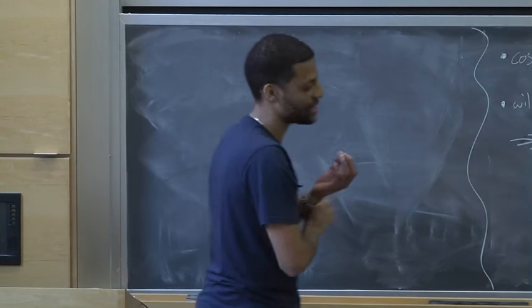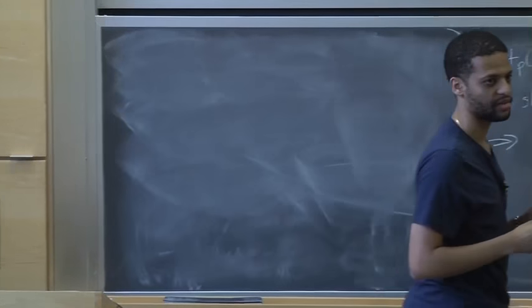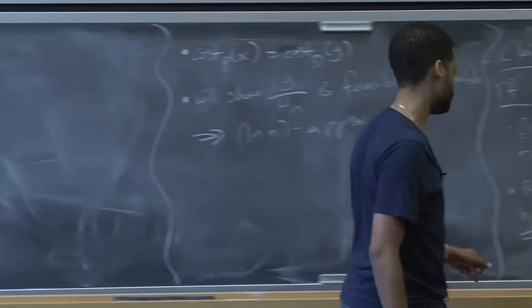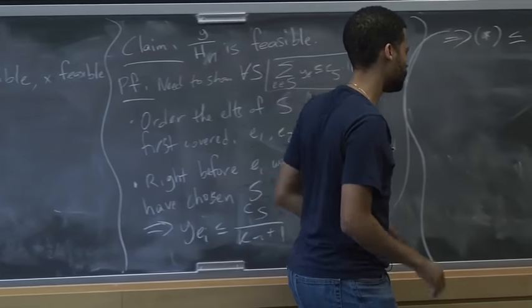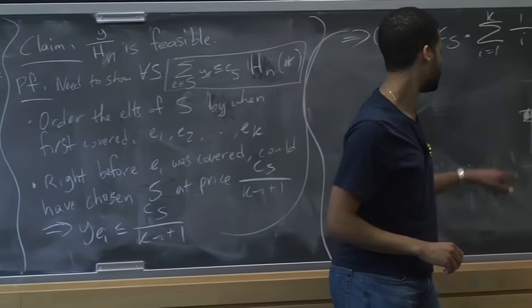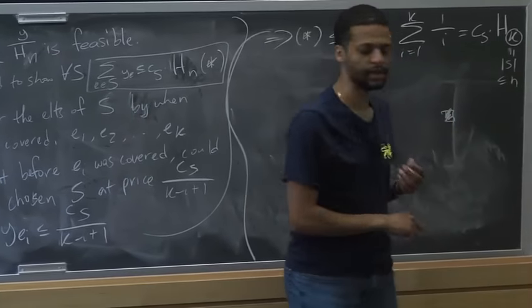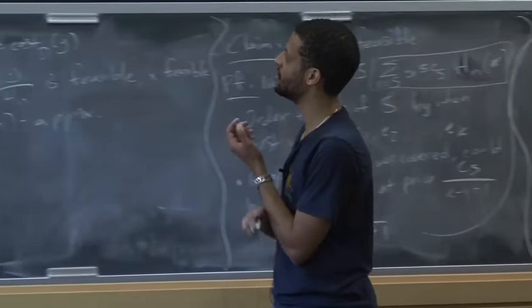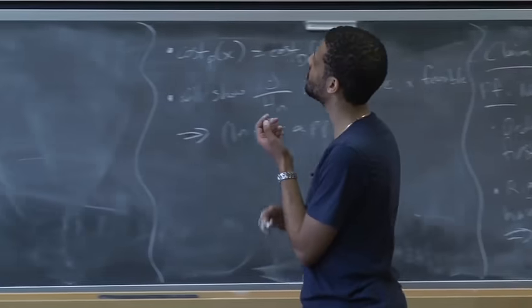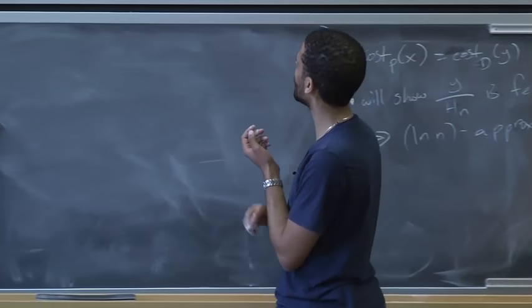Both feasible, but primal cost is at most twice dual cost, which gives us the 2-approximation. On the pset, you'll see the case where the vertices are actually weighted, so you're trying to minimize XV times the cost of V. Then you need to think about what the greedy algorithm needs to change. By reasoning about both the primal and the dual, you can get a decent algorithm. That's all I want to say about approximation algorithms via dual-fitting or primal-dual. Now I want to move on to integrality gaps.